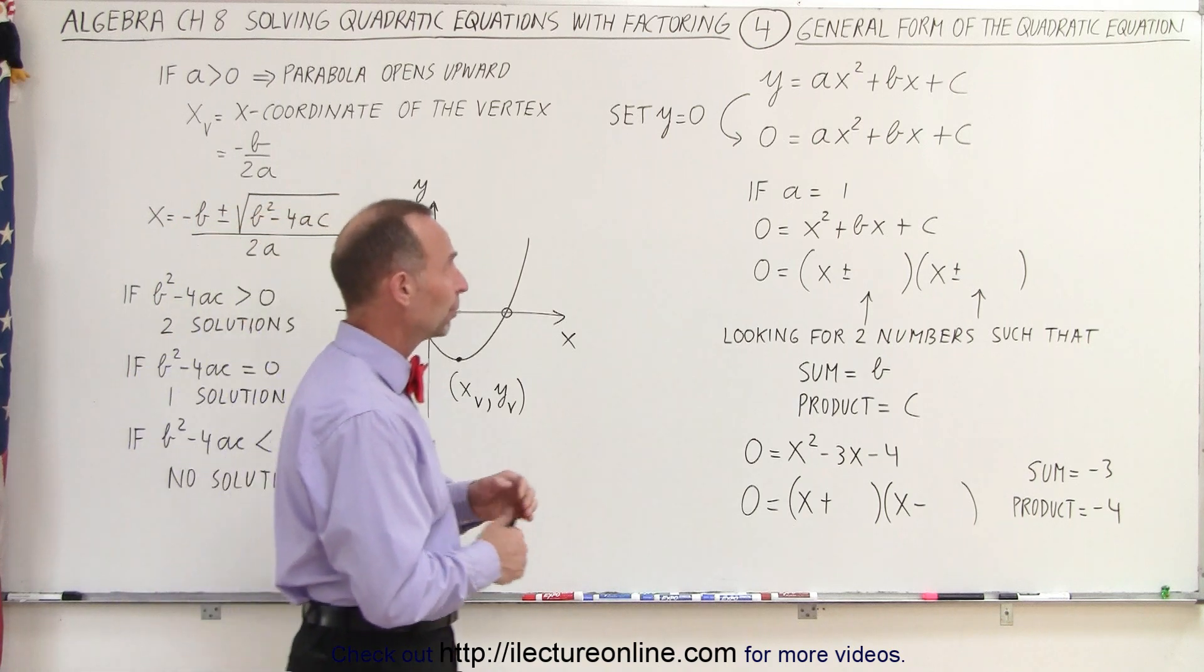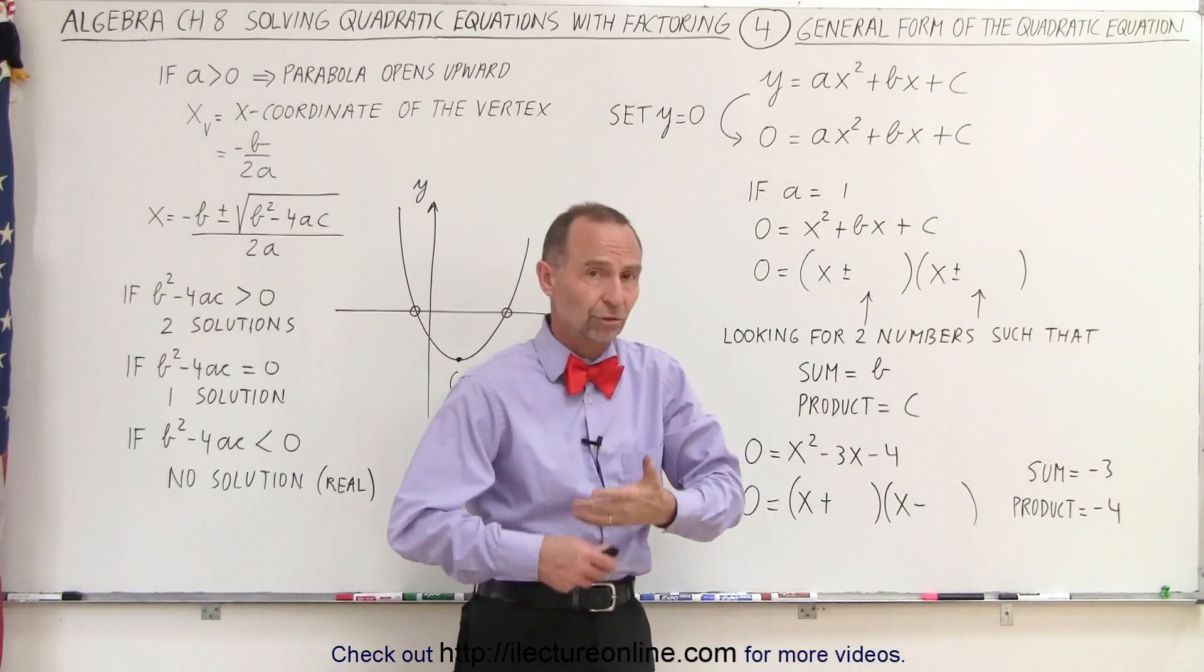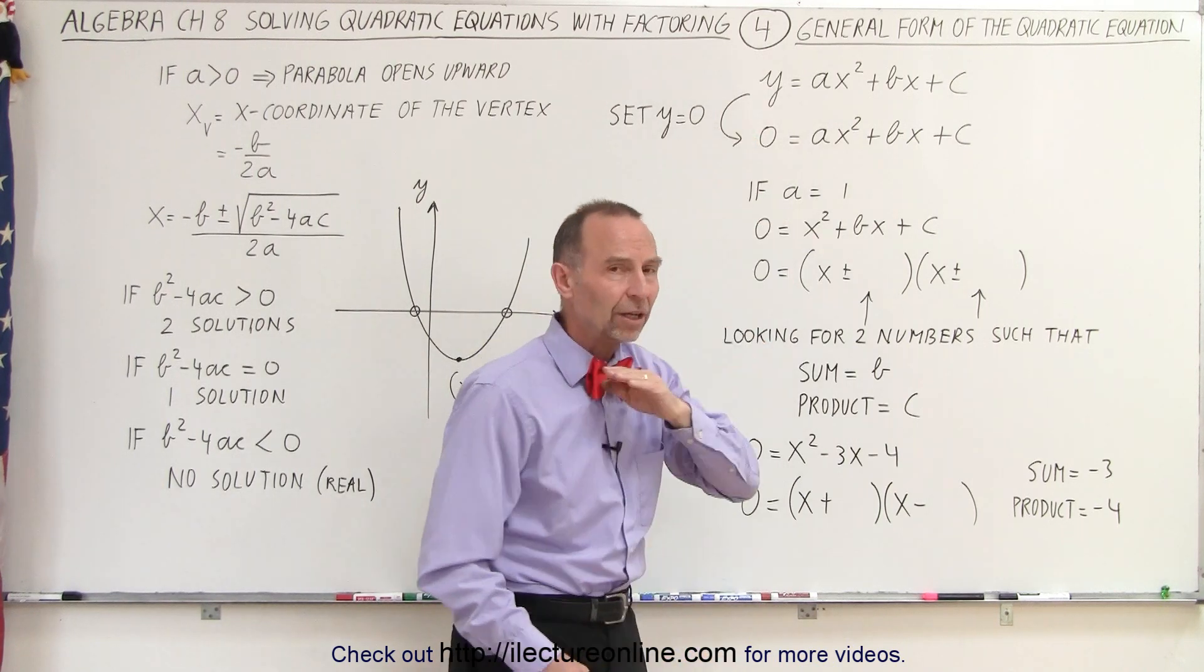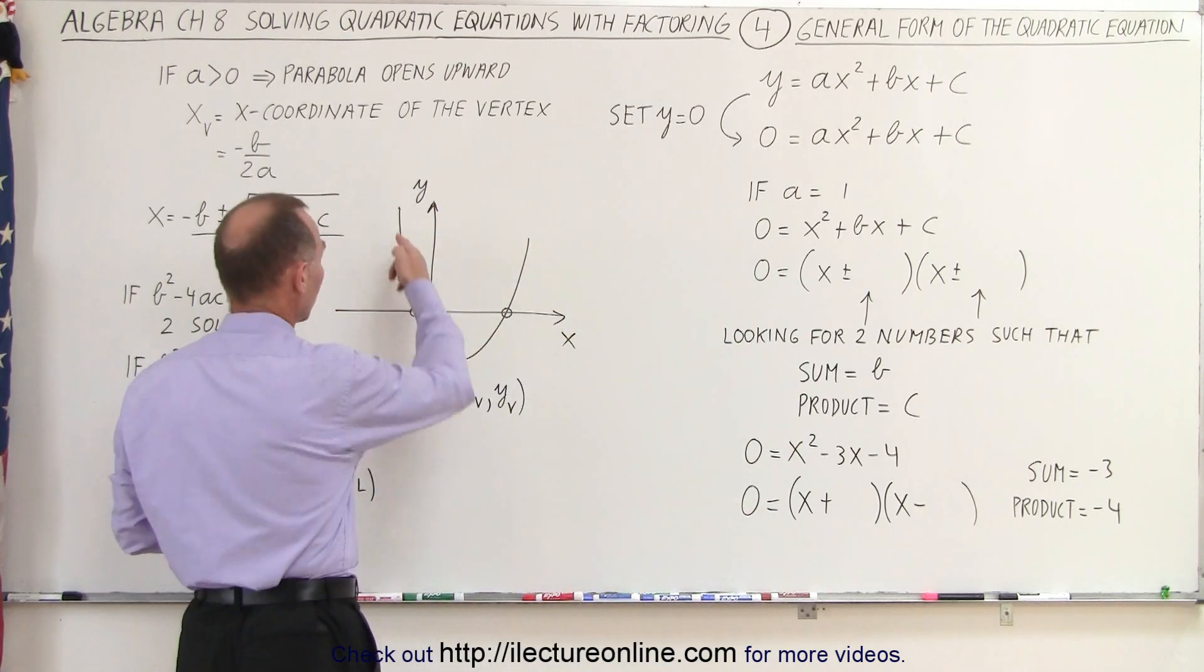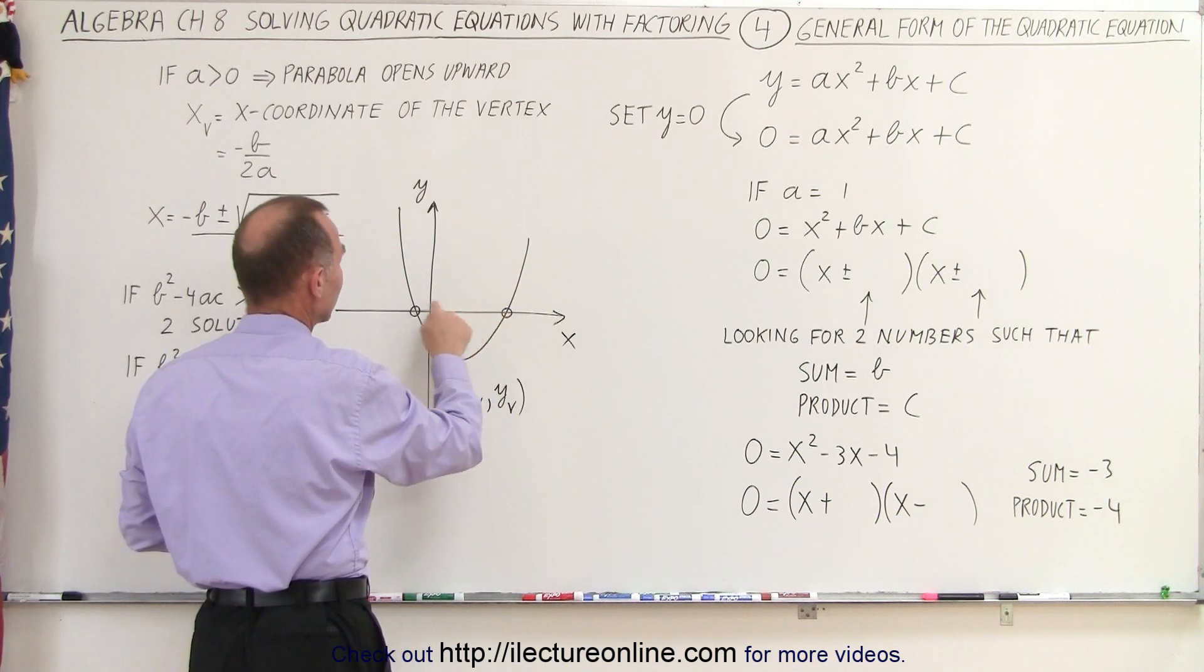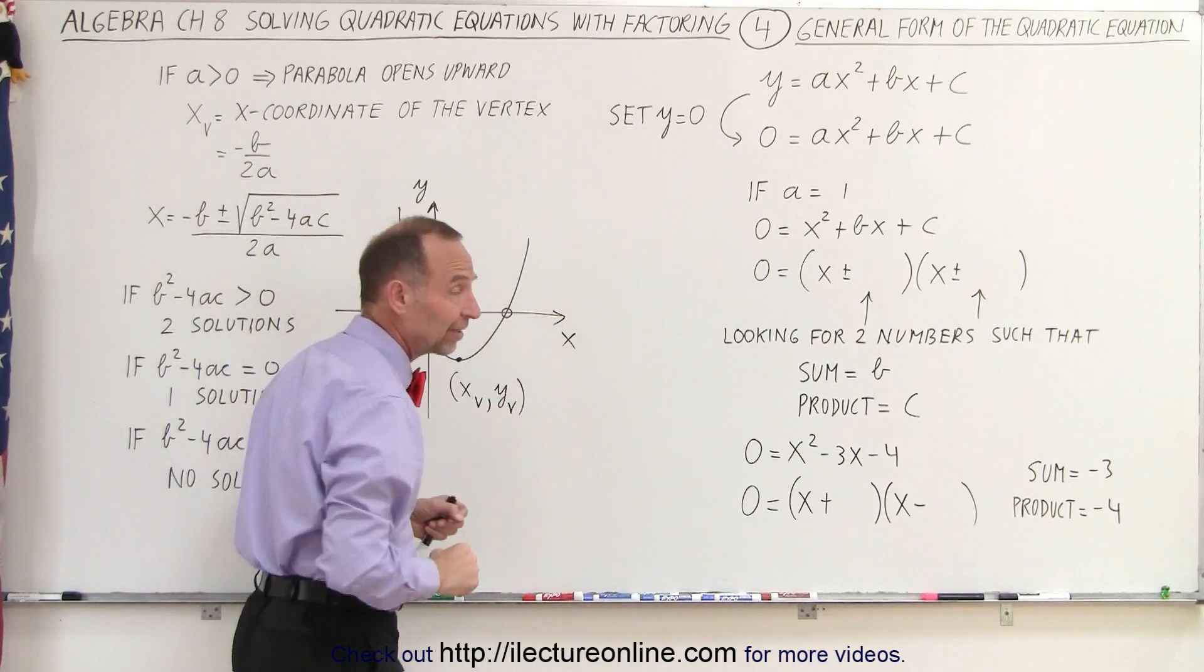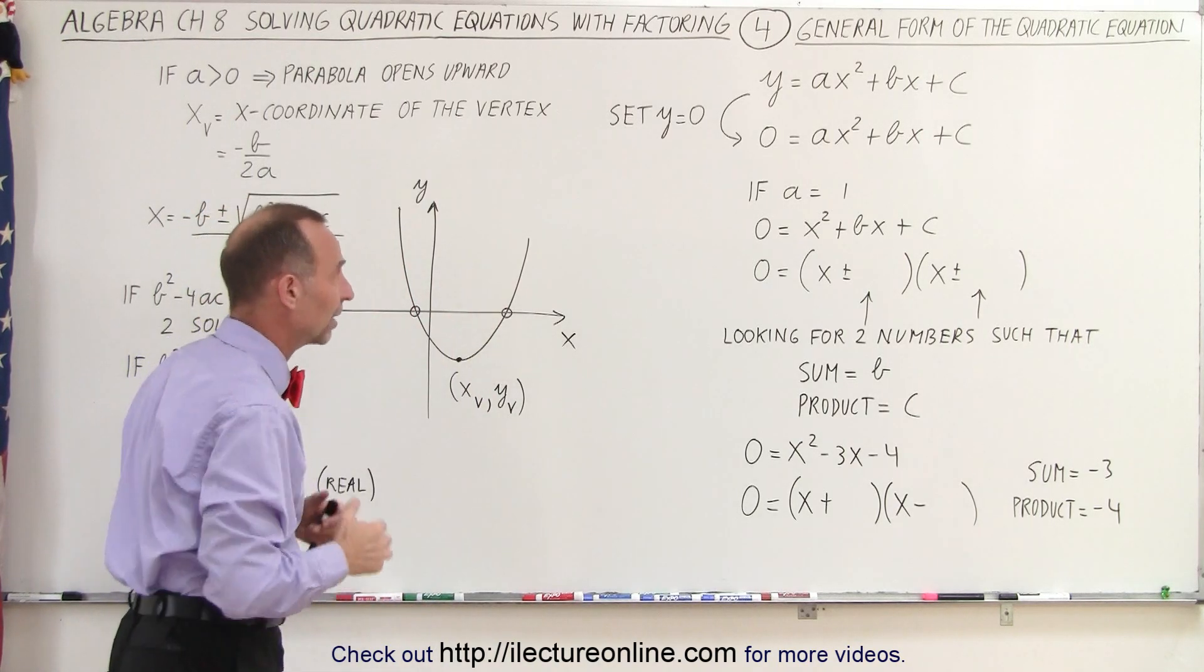The general form of the quadratic equation is y equals ax squared plus bx plus c, where a, b, and c are some sort of constants. If we now want to solve the quadratic equation, we're going to set y equal to 0, because that allows us to find the places where the curve of the function crosses the x-axis. So here, let's say we have the equation where y equals ax squared plus bx plus c, and yes, there are two places where it crosses the x-axis. We can find those by setting y equal to 0, that of course means any point on the x-axis, because that's where y equals 0, and then find the places where the function crosses the x-axis.